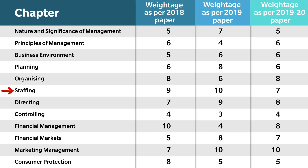For Staffing chapter: in 2018 it came from 9 marks, in 2019 it was 10 marks, and in the 2020 sample paper it gives 7 marks. Chapter 7, which is Directing from Book 1: in 2018 it was 7 marks, in 2019 it came from 9 marks, and in the sample paper it is 8 marks.